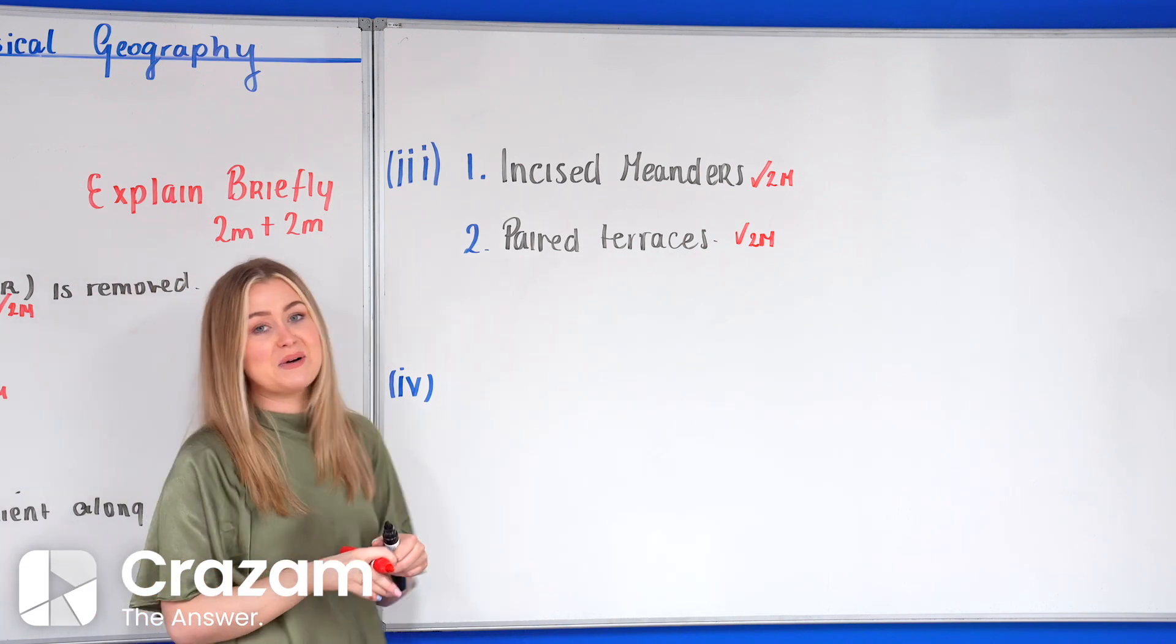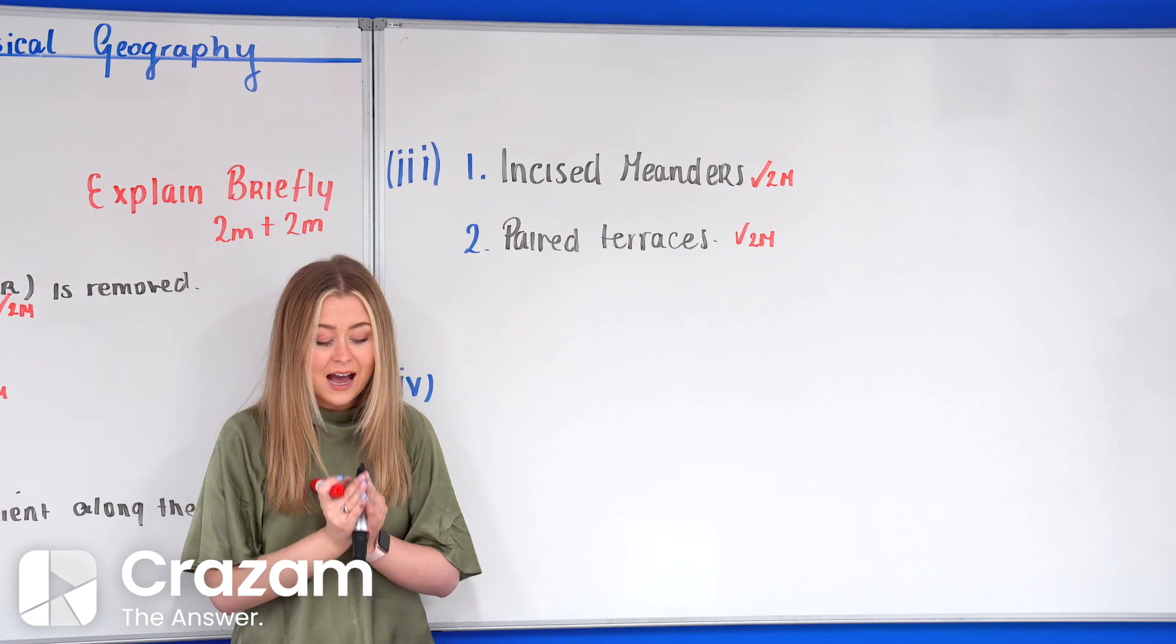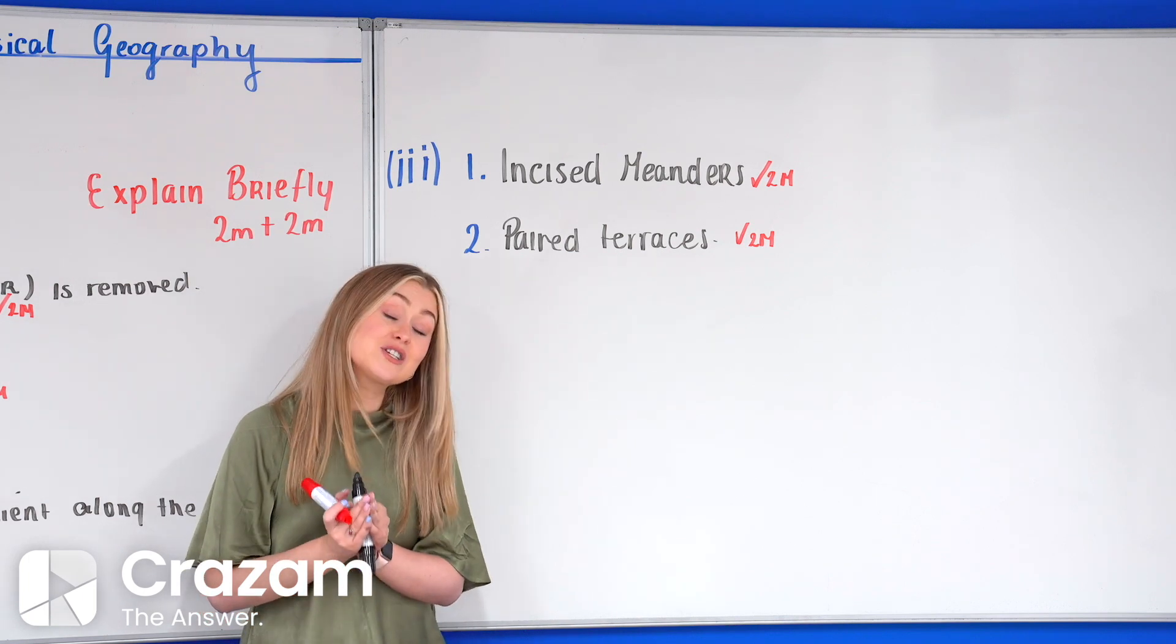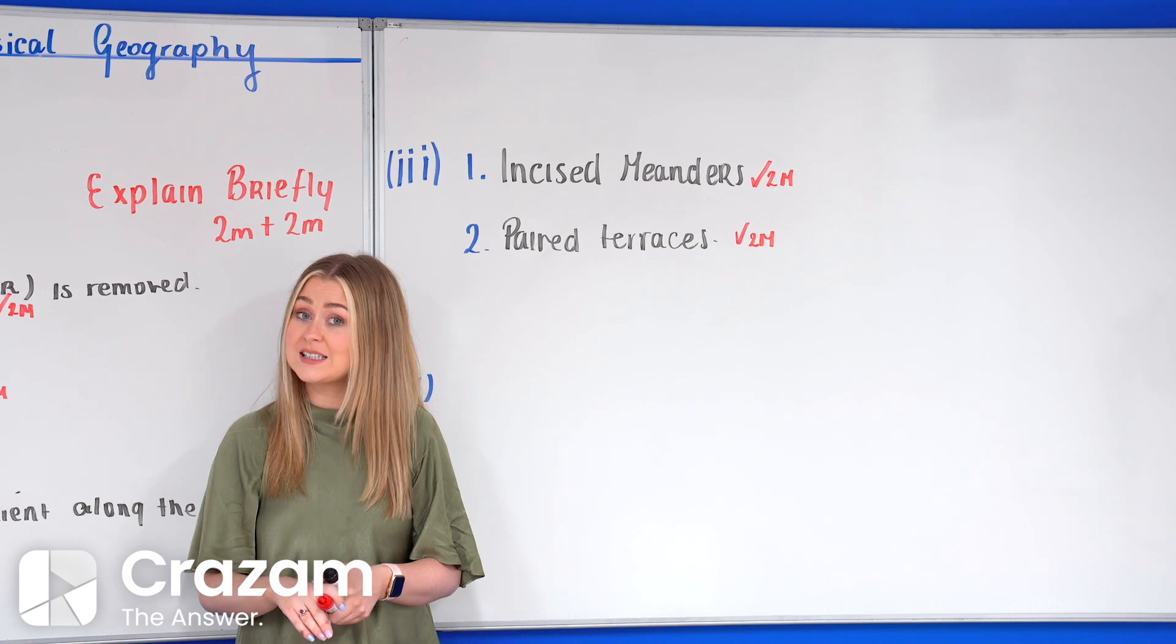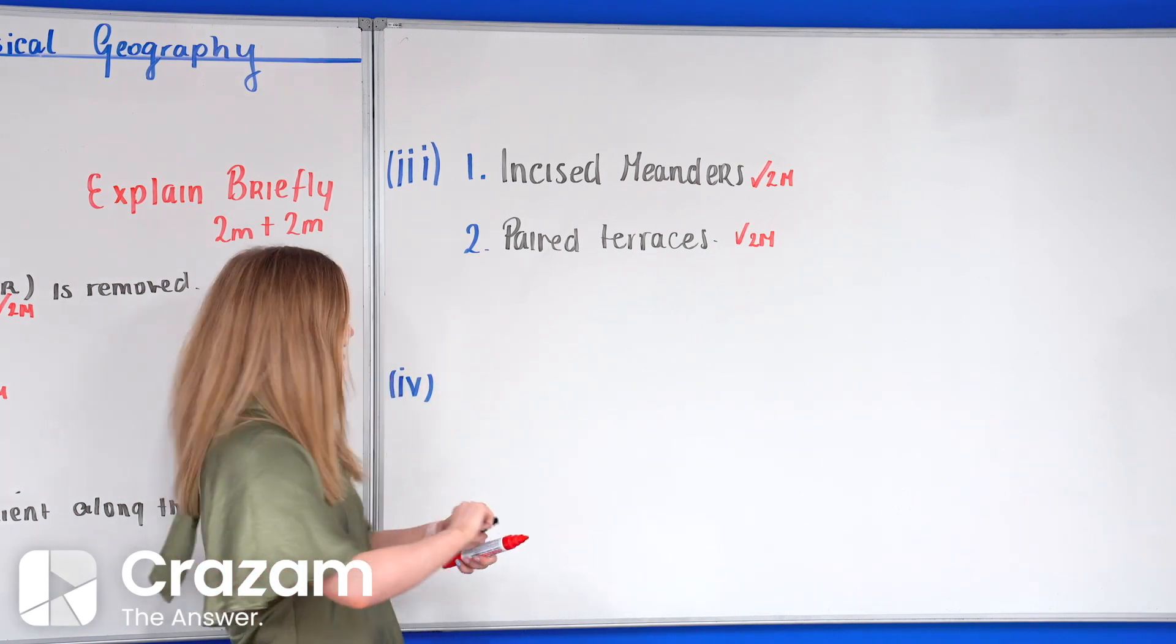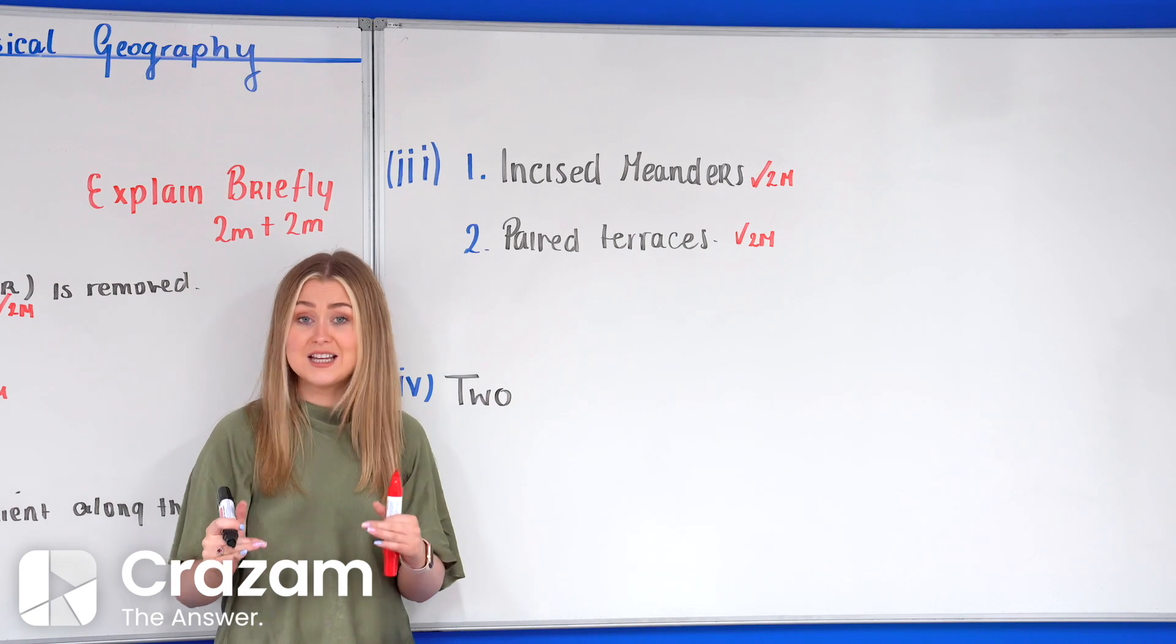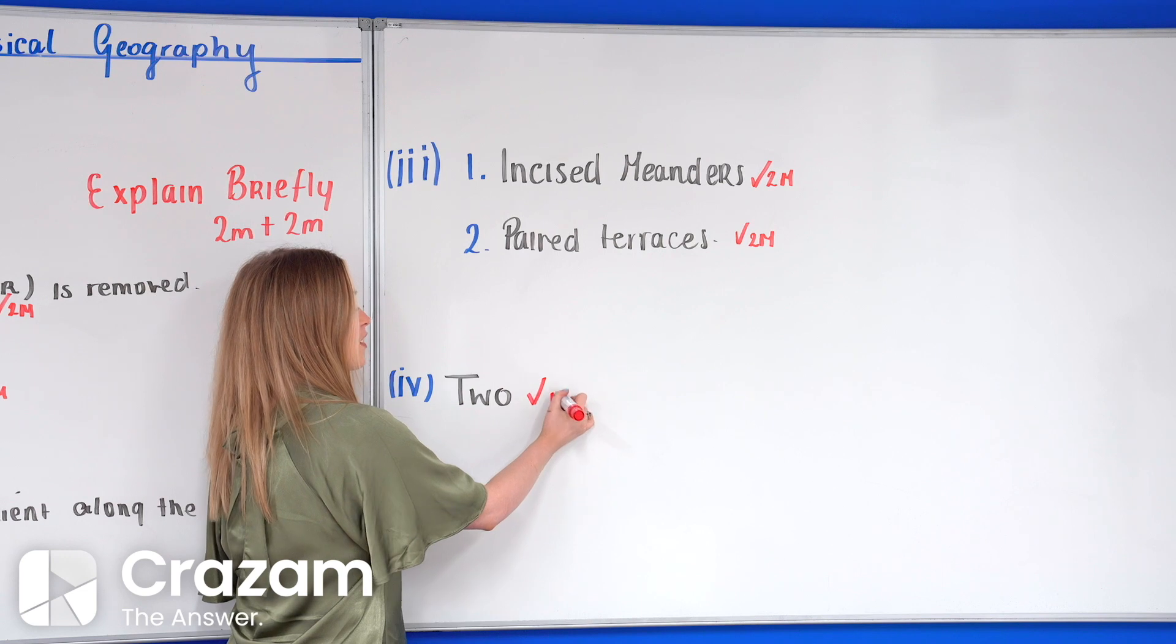Now finally the last part of the question was a nice short simple part. It said how many times has river rejuvenation taken place in the diagram above? Now all you had to do was count the number of nick points. So here you're going to see two nick points which means twice or two is our answer here. Now for just stating the word two, marking scheme wise, huge amount of marks, we're going to get four marks.